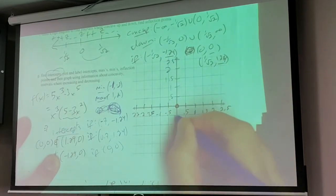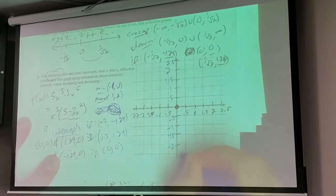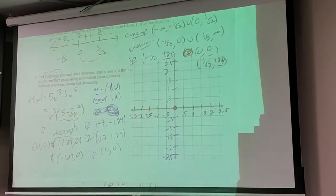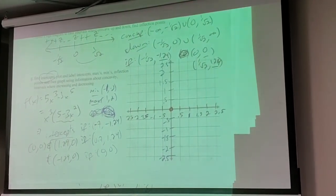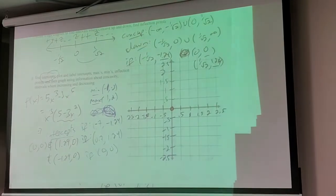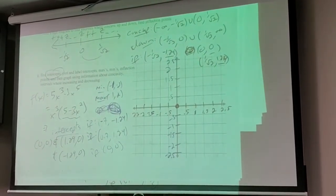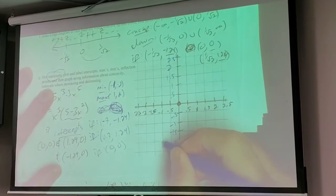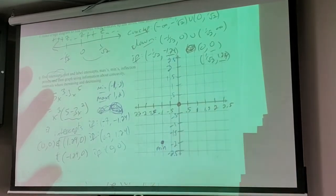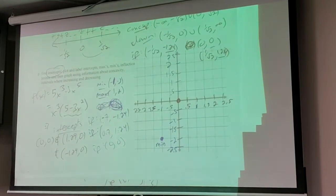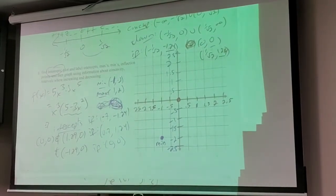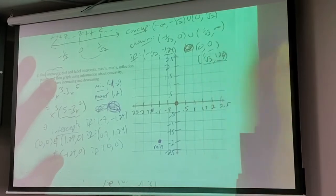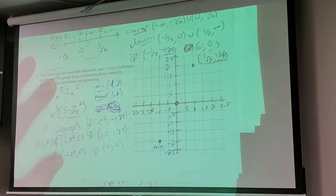One of the overlooked graphing decisions is the choice of scales. Obviously the y-scale does not have to be the same as the x-scale. Let's plot what we have - there's a min at (-1, -2). When I plot it I'm going to put the word 'min' next to it, so as I'm graphing I know when I get there I'm going to turn around. There's a max at (1, 2) - that's a max.